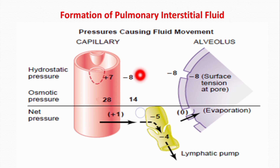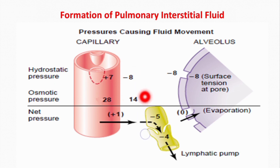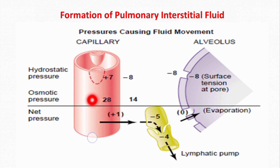The forces which favor the formation of interstitial fluid are three in number: capillary hydrostatic pressure, interstitial fluid hydrostatic pressure, and interstitial fluid colloid osmotic pressure. Together they make the total outward force. The only force which opposes the formation of interstitial fluid is plasma colloid osmotic pressure, which is 28 mmHg.